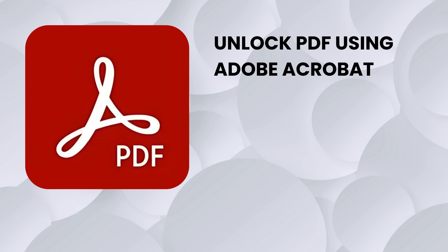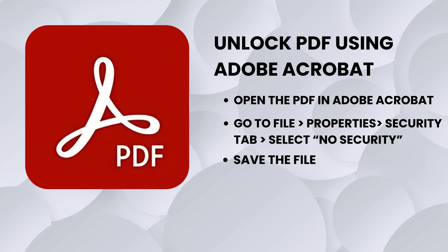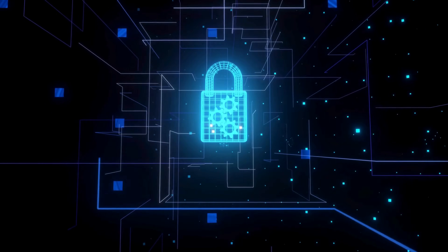Now let's go over some alternative methods. Using Adobe Acrobat: if you have Adobe Acrobat Pro and know the password, this method is a breeze. Open your PDF in Adobe Acrobat, navigate to File > Properties > Security tab, and change the security settings by selecting 'No Security.' Save the file and the password protection is gone. This is a quick and secure option if you already have the software.